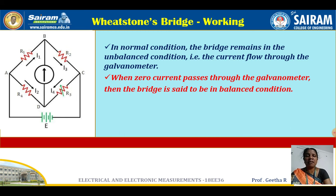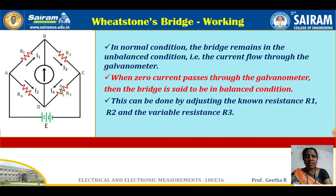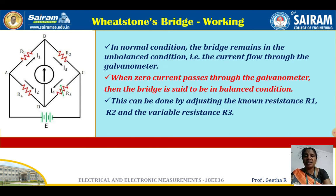When zero current passes through the galvanometer, points B and D are at the same potential, giving null deflection — this is the balanced condition. This balancing is done by adjusting the known resistances R1 and R2 and the variable resistance R3, since R4 is the unknown resistance being measured. By varying R1, R2, and R3, you bring the potential of B and D to be the same, achieving null deflection.